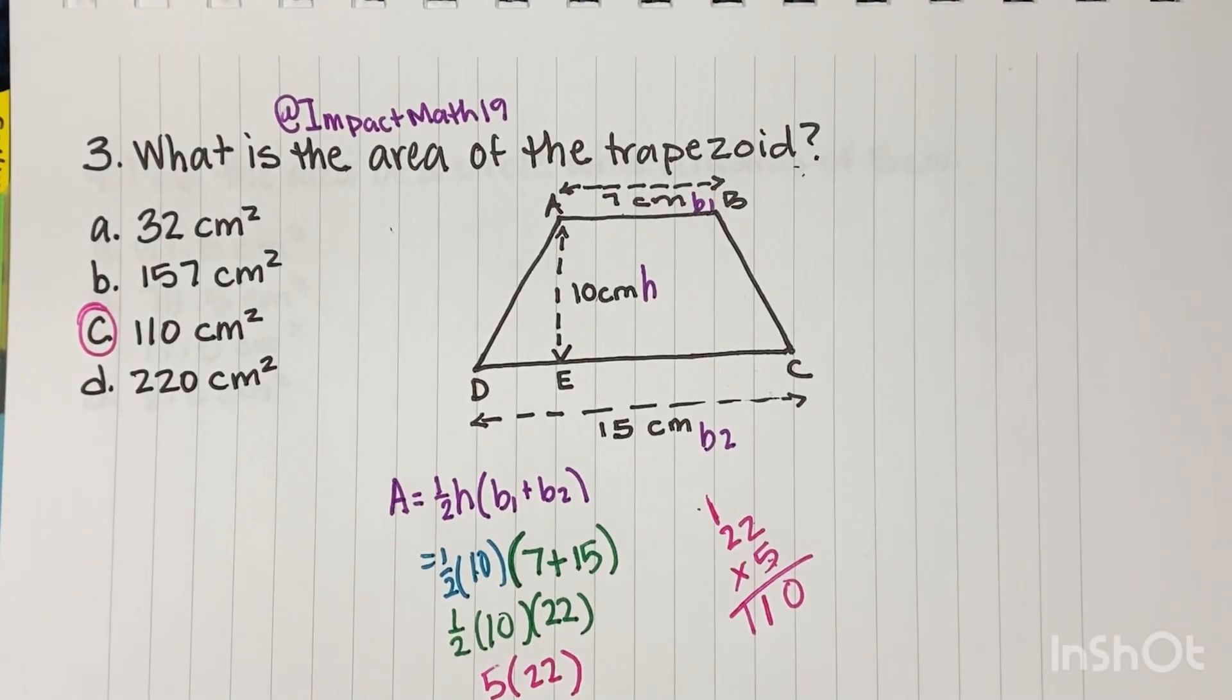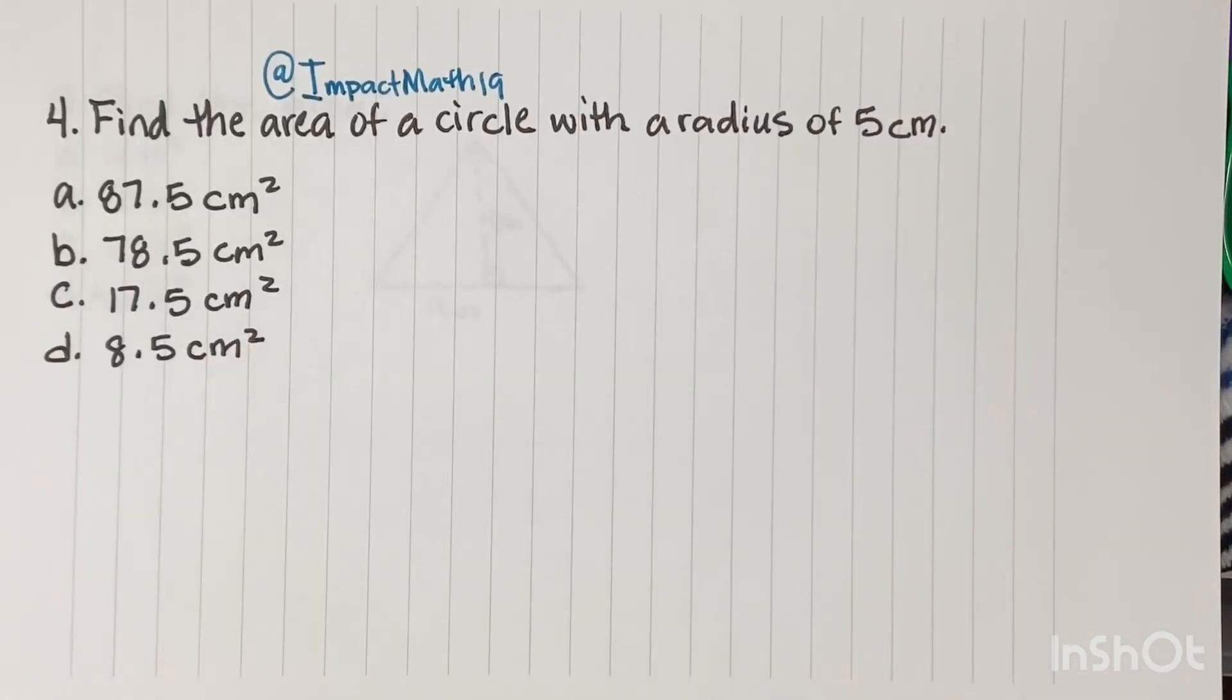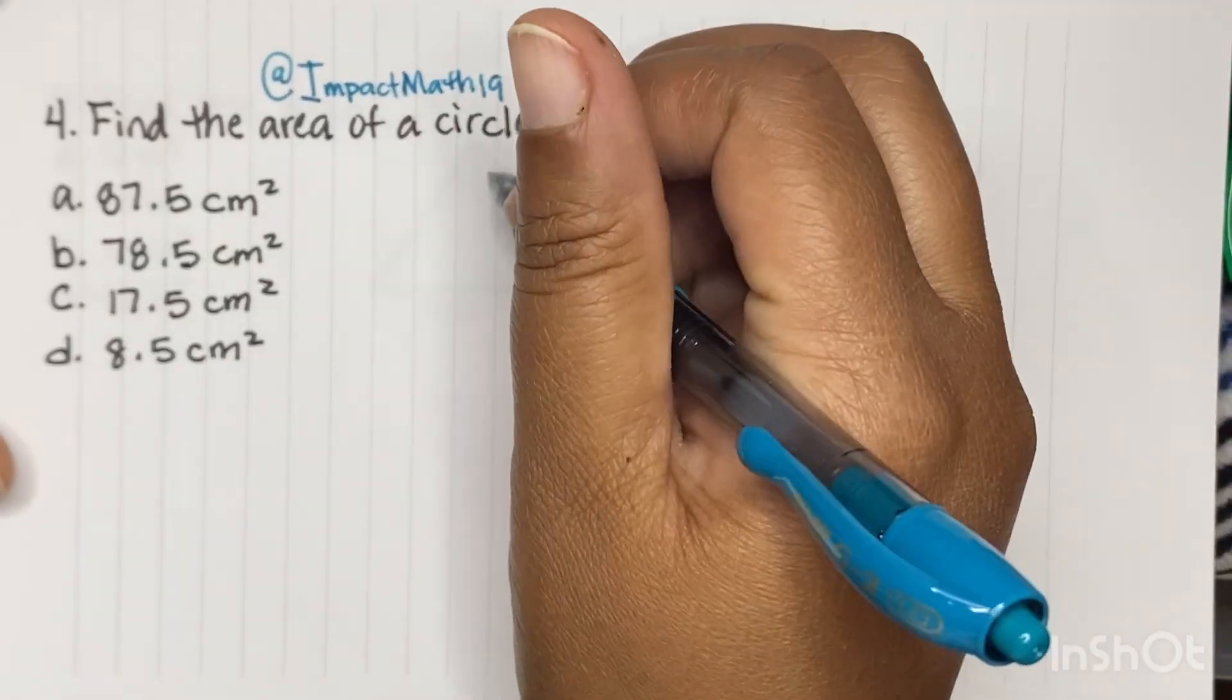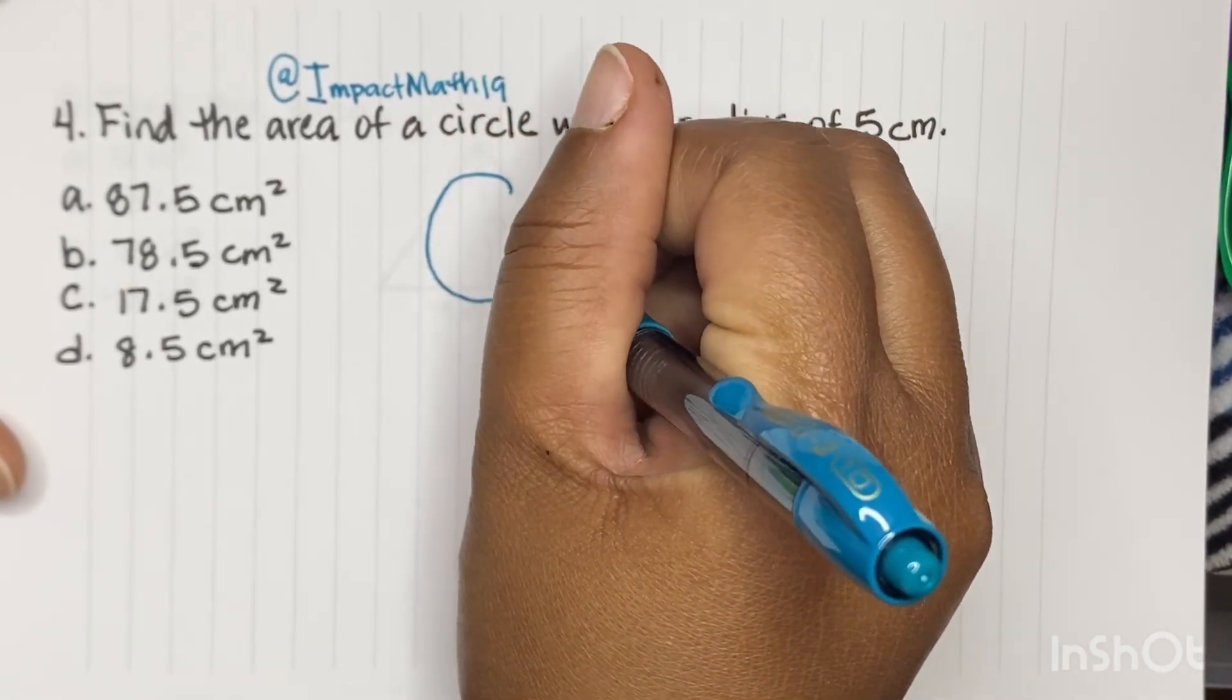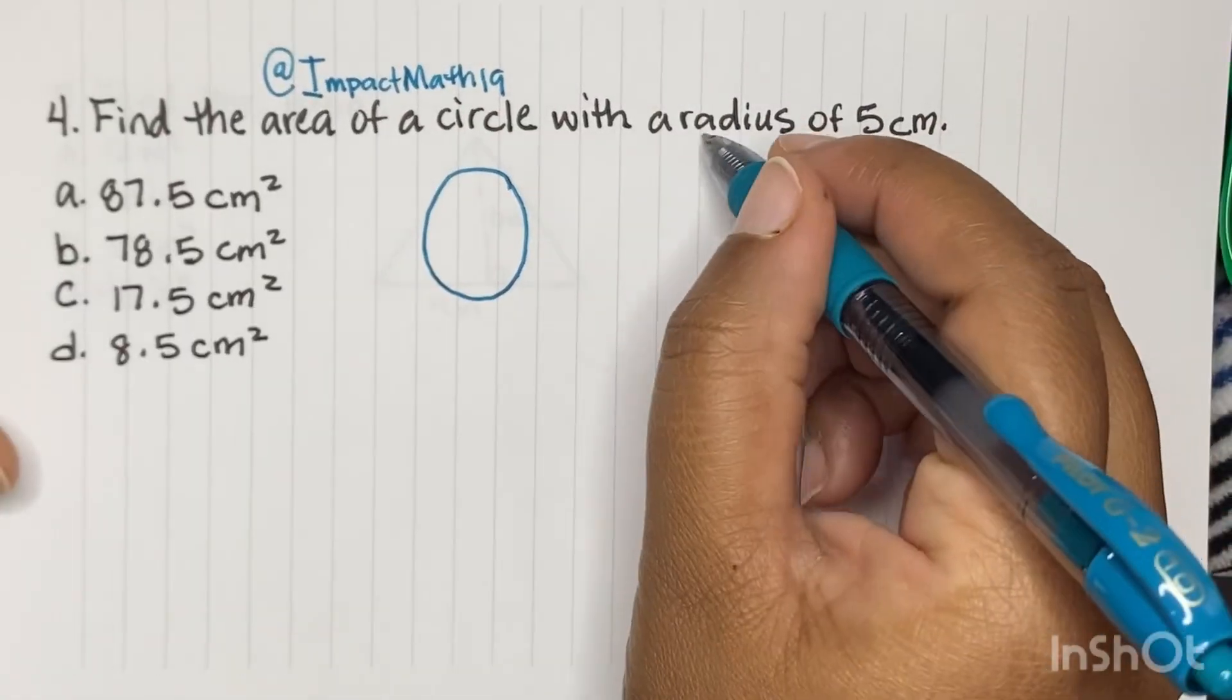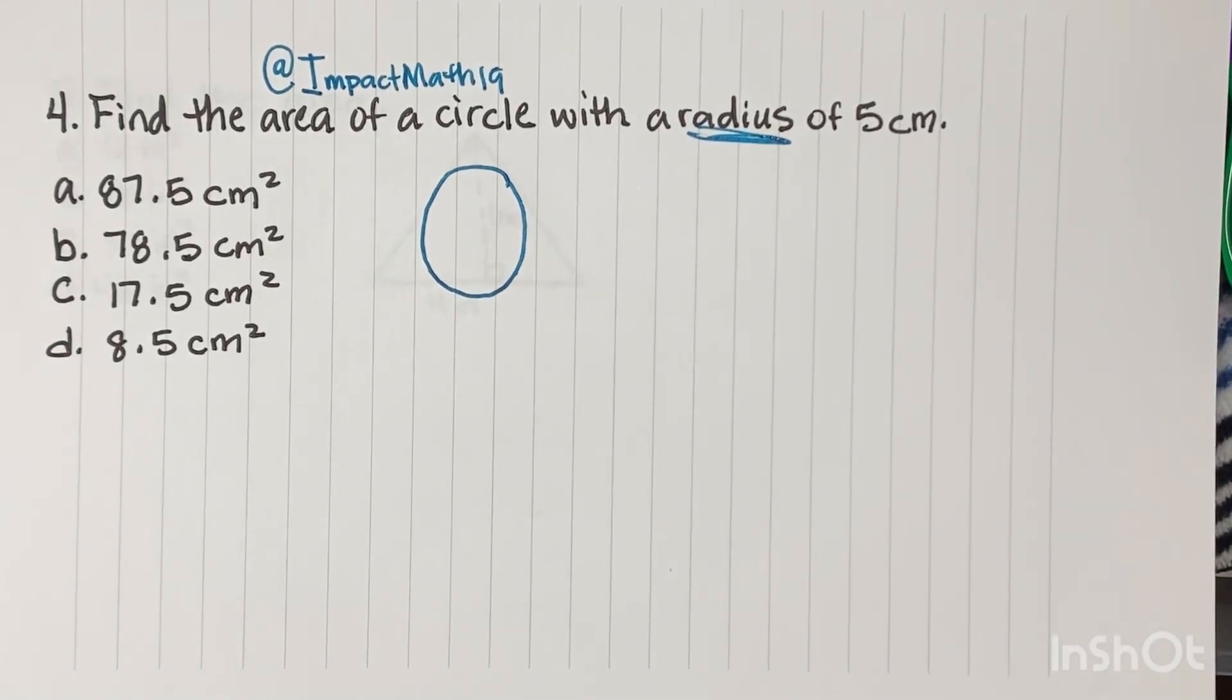Alrighty. Thank you so much for watching so far. I hope this is a blessing and a help to you. And let's do number 4. Find the area of a circle with a radius of 5 centimeters. Alright. So I always tell all my people, draw the figure that they're talking about. So you're going to draw a circle. You have to understand this important vocab word right here, which is a radius.